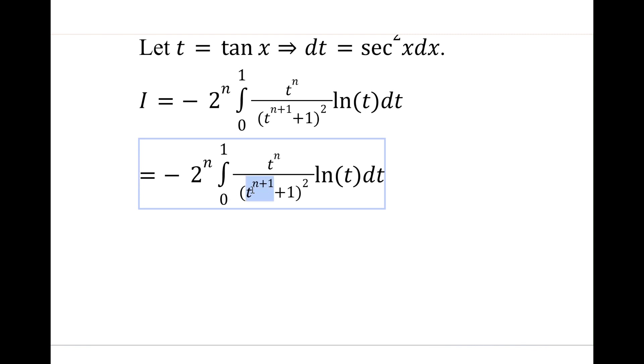Notice that we have 1 on 1 plus something squared. So that something here is t to the n plus 1. t to the n plus 1 is between 0 and 1 in this bound. The goal is to write this whole chunk as a series and we do that using a geometric series. So 1 on 1 minus u, that's clearly a geometric series, the infinite sum of u to the k. But we can replace u with minus u to get a similar series.